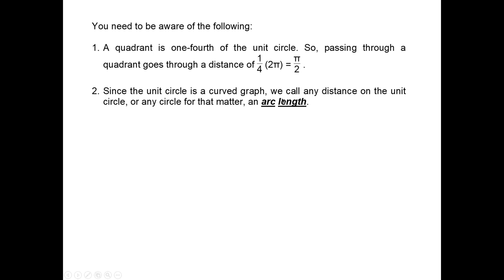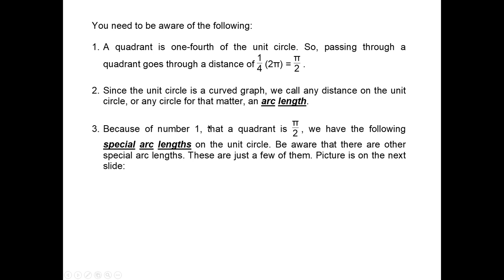A quadrant is one-fourth of the unit circle, so passing through a quadrant is a distance of one-fourth times 2π, which is π over 2. Since the unit circle is a curved graph, any distance on a circle is called an arc length. The arc length of one-fourth of the unit circle is π over 2 units. There are other special arc lengths — these are just a few of them.